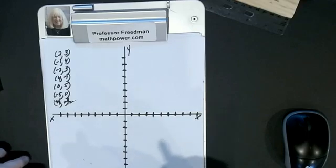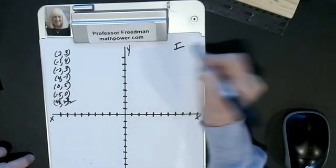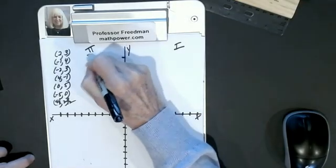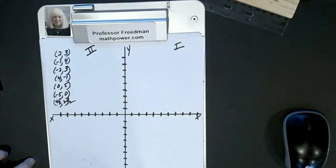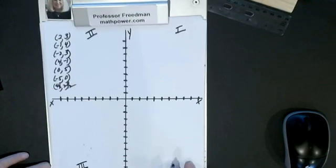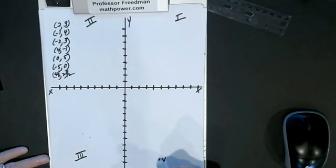They are counterclockwise. This is quadrant one, this is quadrant two using Roman numerals, this is quadrant three, and this is quadrant four.